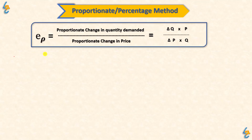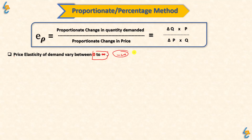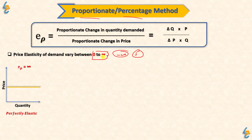The most important thing is that Price Elasticity of Demand always varies from 0 to infinity — it is not negative. From 0 to infinity, it can take 5 values when we use the proportionate or percentage method.